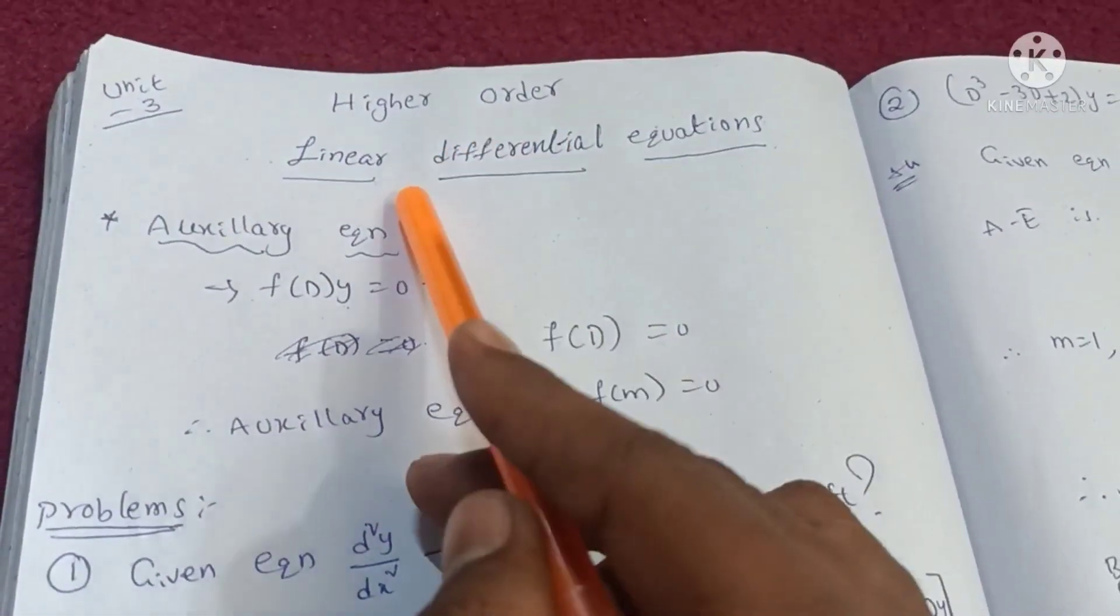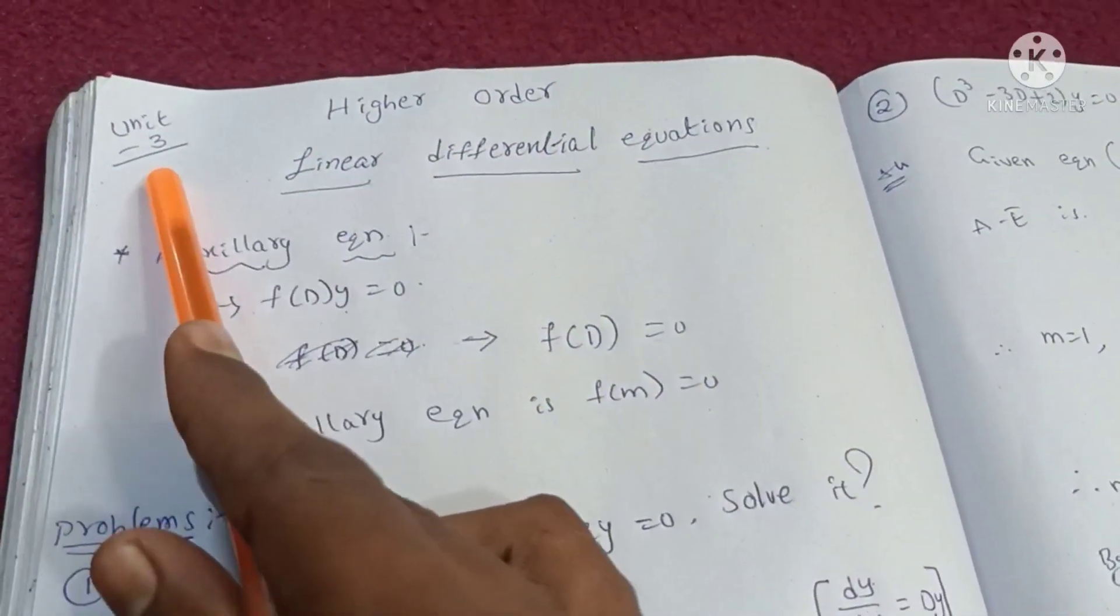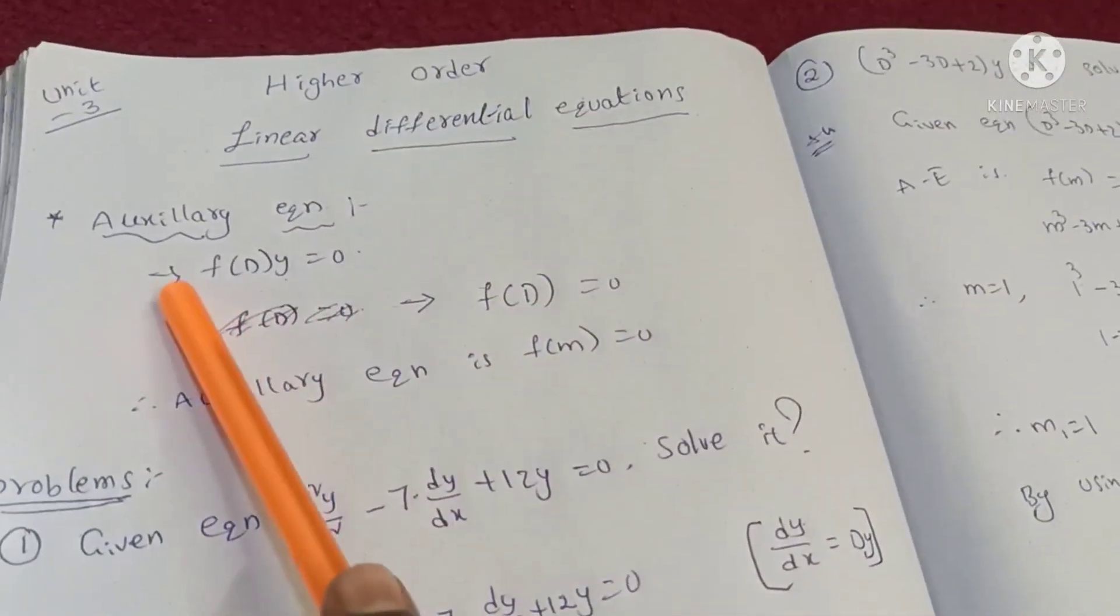Unit 1: Higher Order Linear Differential Equations. In the first semester, the unit is 3. The first topic is auxiliary equation.